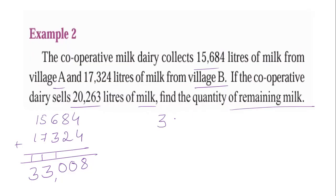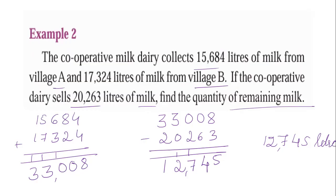They sell 20,263 liters. Subtract 33,008 minus 20,263. 8 minus 3 is 5. 0 minus 6 is not possible, borrow 10 from nearby house, it becomes 10. 10 minus 6 is 4, carry 1. 10 minus 3 is 7, carry 1. 3 minus 1 is 2. 3 minus 2 is 1. The remaining milk is 12,745 liters.